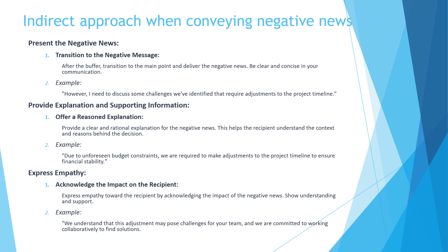The third step is to provide explanation and supporting information — clearly explain the reason behind the negative news to help the recipient understand the context. For example: 'Due to unforeseen budget constraints, we are required to make adjustments to the project timeline to ensure financial stability.' Providing a rationale helps the recipient see it as a necessary decision rather than an arbitrary one.